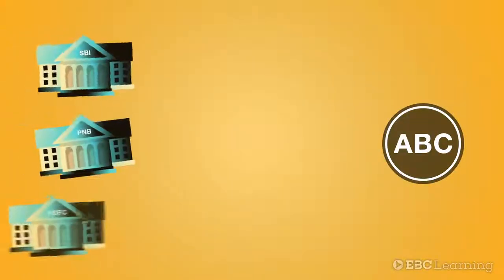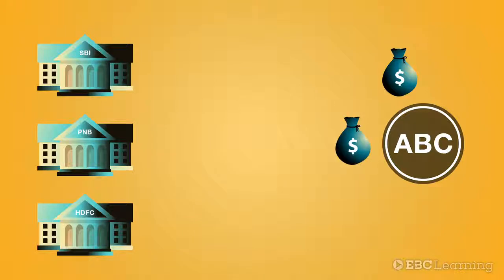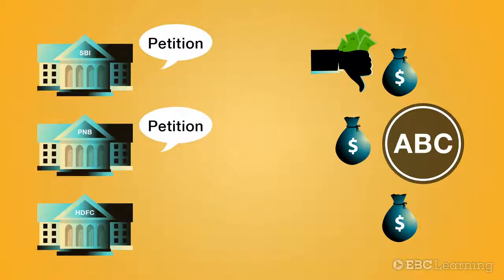Let me illustrate this. ABC Corporation has taken loans from three banks: 10 million from State Bank of India, 20 million from Punjab National Bank, and 30 million from HDFC Bank. If ABC defaults in repaying SBI's loan, then not only SBI but Punjab National Bank or HDFC can also approach the tribunal against ABC for initiating the corporate insolvency resolution process.